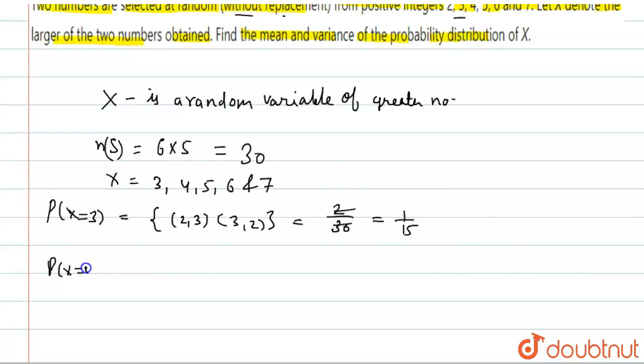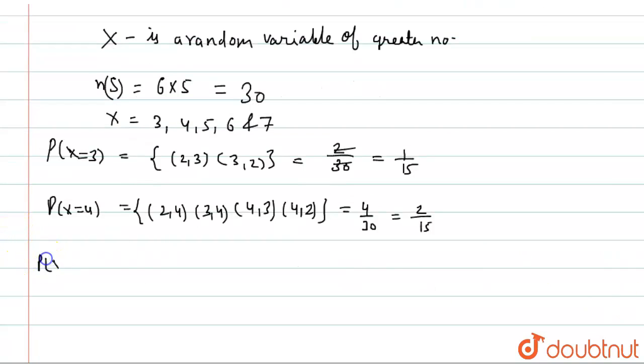P(X=4) will be equal to (2,4), (3,4), (4,3), and (4,2). This is equal to 4 by 30. P(X=5) is equal to (2,5), (3,5), (4,5), (5,4), (5,3), (5,2). This is equal to 6 by 30, which is equal to 3 by 15.